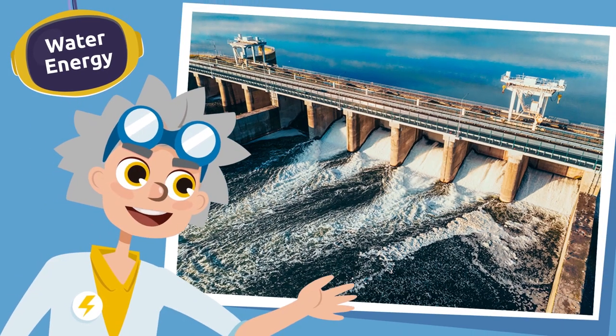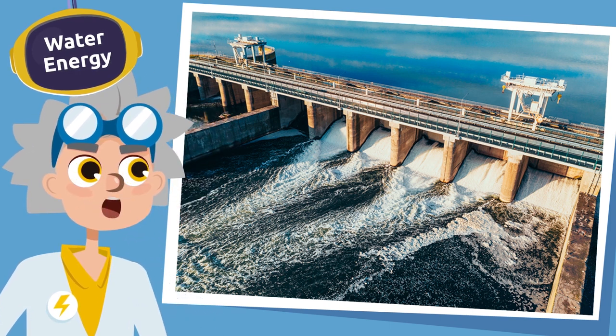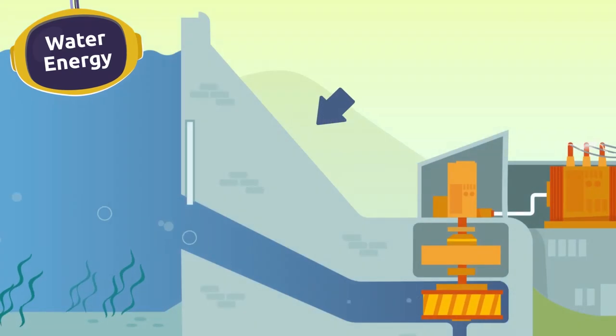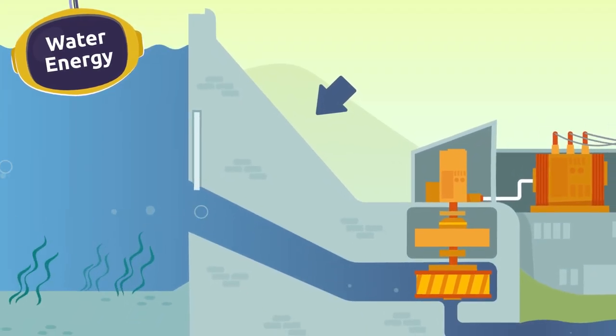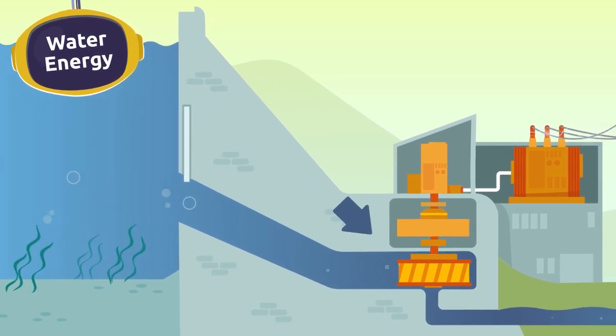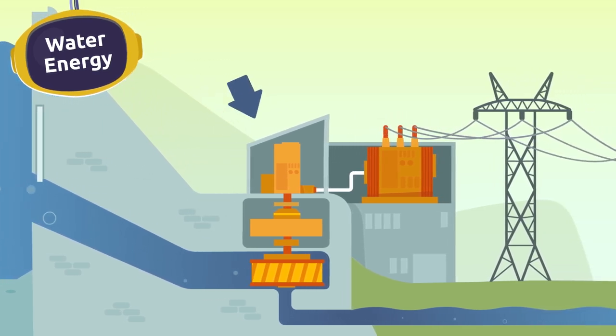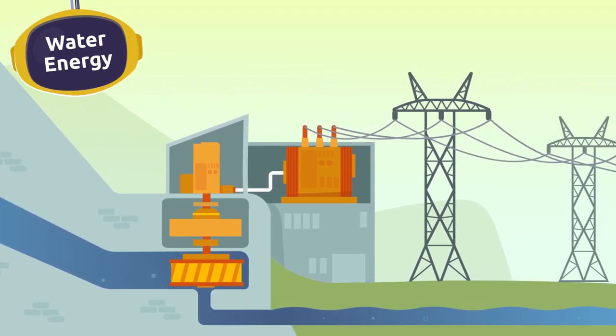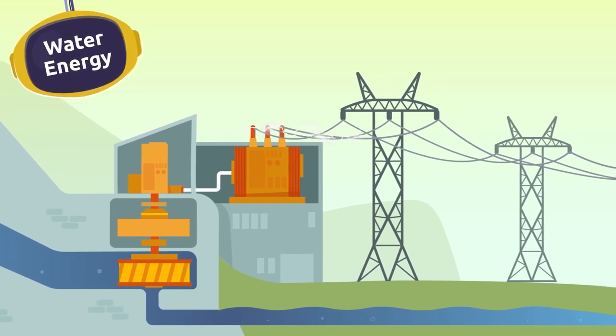We can also get energy from the force of the water. Maybe you have seen a dam—it is a big wall built to collect large amounts of water. The water is pushed through pipes which creates the pressure needed to turn the blades of the turbine, thus activating the generator and producing electricity. This type of energy is called hydroelectricity.